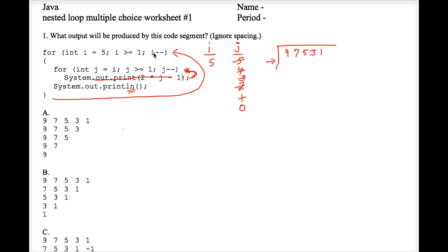i minus minus — five is decremented to four, so i is now four. Four is greater than or equal to one, so we go through the outer for loop again and reach the inner for loop, where j is redeclared and set equal to i, so j is equal to four.